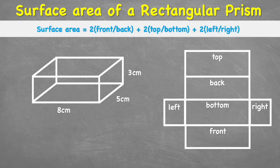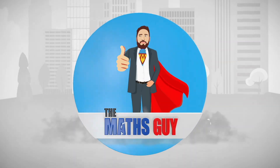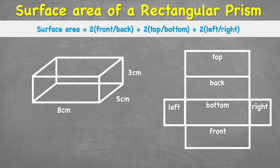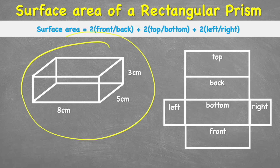Welcome back to the Maths Guide. Today we are looking at how to work out the surface area of a rectangular prism. First, what is a rectangular prism? It is a 3D shape that is bound — meaning joined — by six rectangular faces.